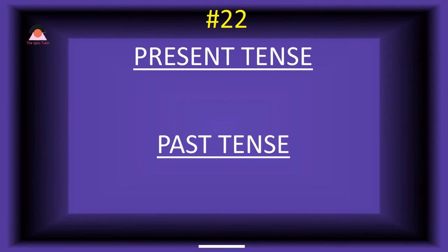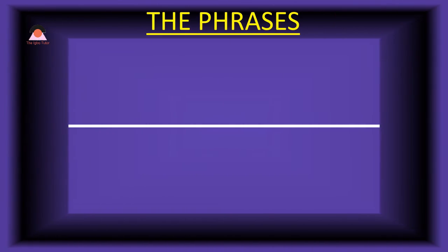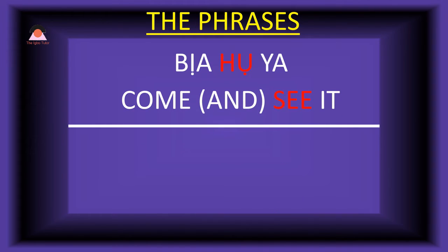Word number twenty-two: 'hoo,' meaning 'see.' The past tense of hoo is 'horo,' meaning 'saw.' Present tense phrase: 'biya ho ya' — come and see it. Past tense: 'a-horum ya' — I saw it.